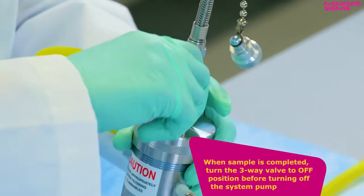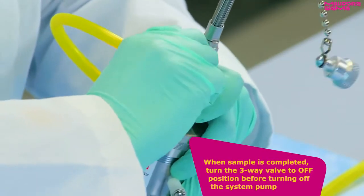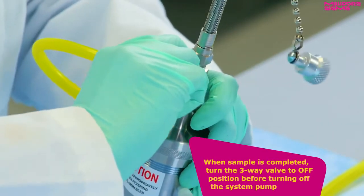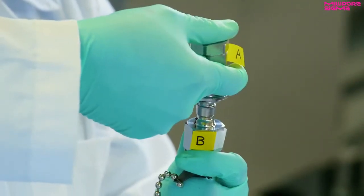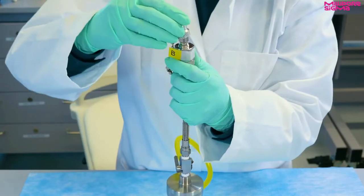When the sample is completed, turn the three-way valve to the off position before turning off the system pump. Remove the sampler nipple from quick release valve and replace the protective cap on the sampler.